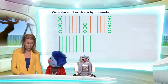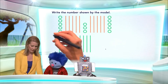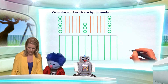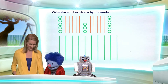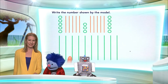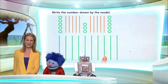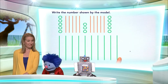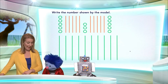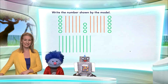All right, I want to count the number of tens we have. It's a little small — how about we make it bigger? That'll make it easier. There we go. Ready? Here we go: one, two, three, four, five, six, seven, eight, nine, ten. Very good — so we have ten tens.